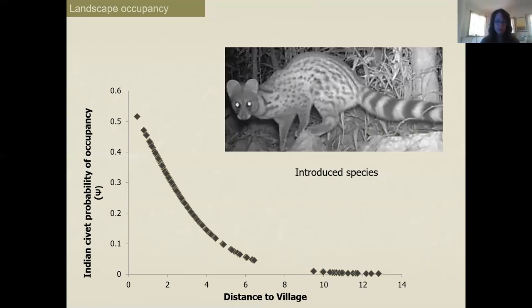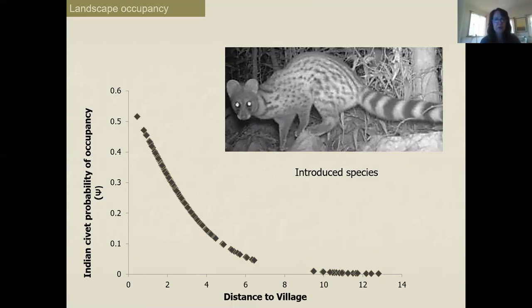Another Madagascar example involves an introduced African civet. Using habitat variables like distance to village, we found this species does really well close to villages with about fifty percent occupancy, but does not do well farther out in the forest. It can't compete with native forest species, but likely outcompetes native species closer to villages.